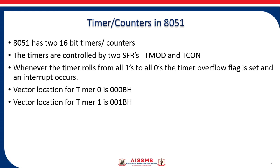Whenever the timer rolls from all ones to all zeros, we say the timer has overflowed, and whenever the timer overflows a flag called the Timer Overflow Flag is set. If the timer interrupts are enabled, control is transferred to a particular memory location — for Timer 0 it is 000B and for Timer 1 it is 001B.